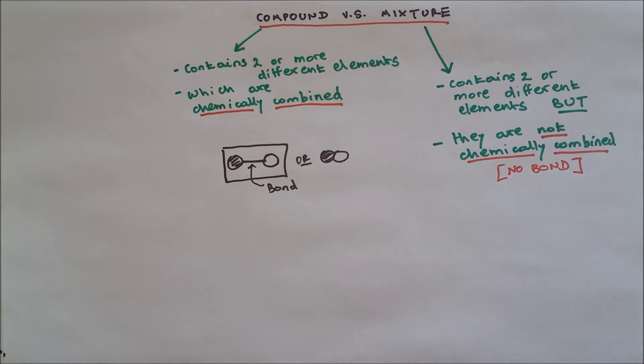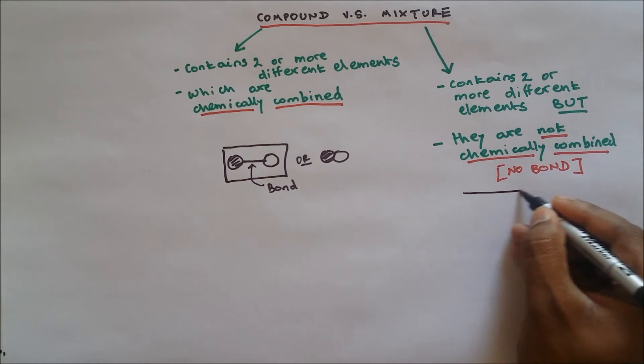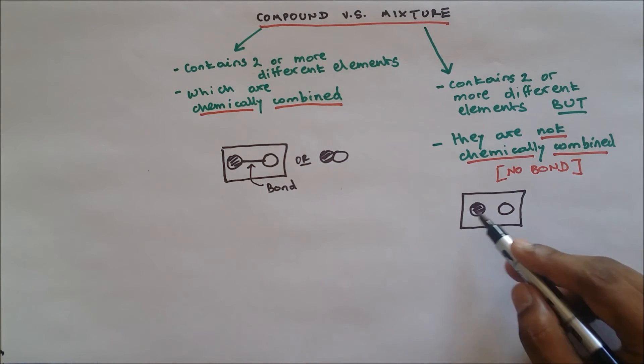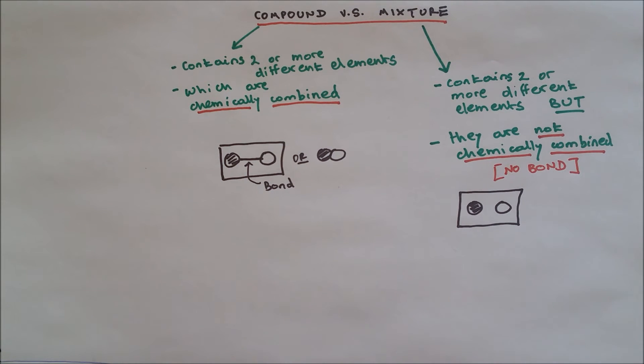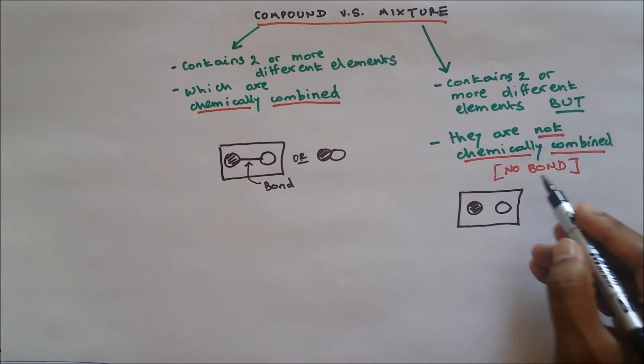So if I do a diagram representation, the two different atoms will not be combined because there is no bond.